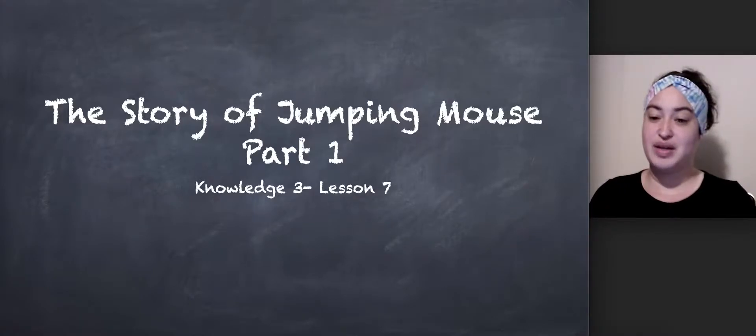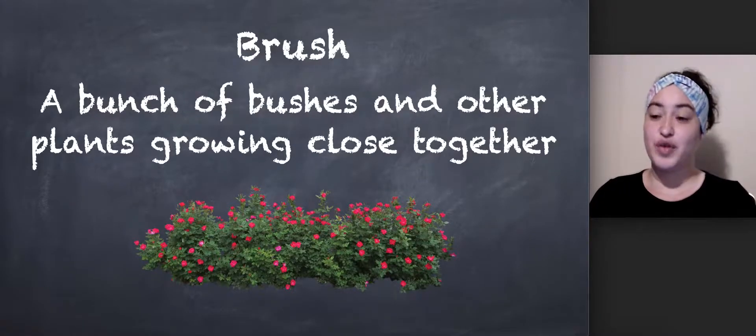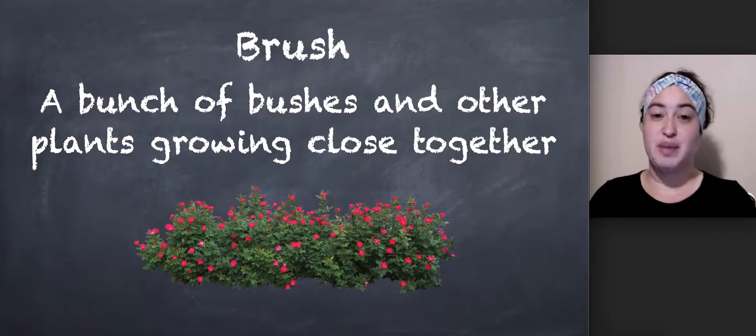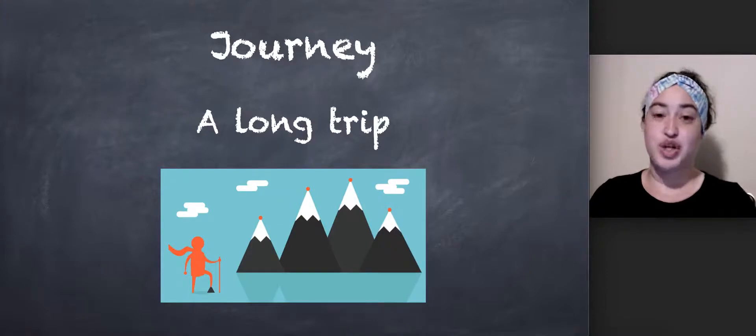Let's go over some vocabulary. Our first word is brush. Say brush. A brush is a bunch of bushes and other plants growing close together. Journey. Say journey. A journey is a long trip.